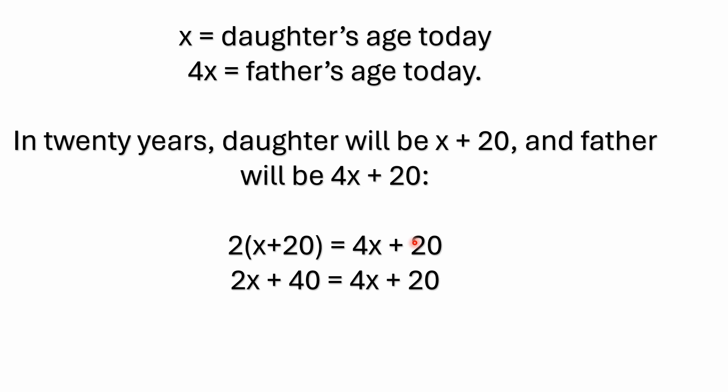We could set a variable here to represent the daughter's age today. We'll just use X. We could have used any letter we wanted, but we'll use X and say X represents the daughter's age today. And we know that the father's four times as old as the daughter today. So the father would be 4X.